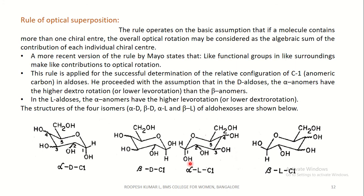The rule of optical superposition was first stated by van't Hoff in 1894. This rule operates on the basic assumption that if a molecule contains more than one chiral center — that is, a diastereomer — the overall optical rotation may be considered as the algebraic sum of the contributions of each individual chiral center. A more recent version by Hudson states that like functional groups in like surroundings make like contributions to optical rotation.